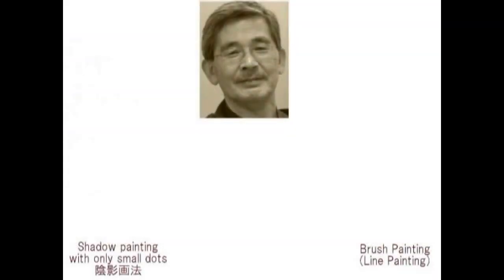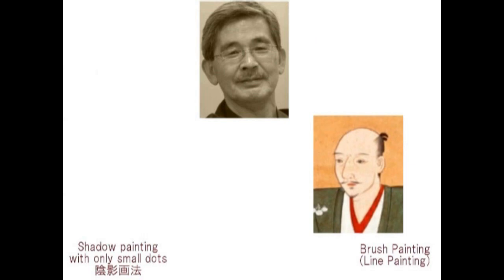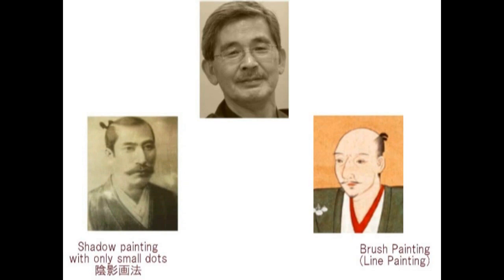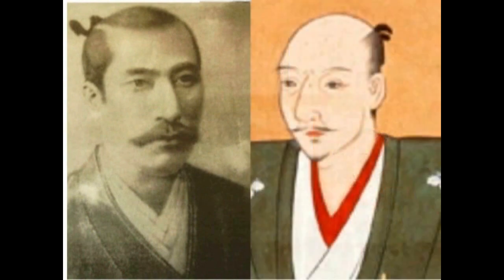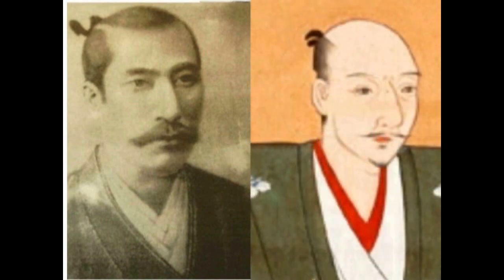線で描くのではなくて点で描くということです。そして陰影をつけていく。点をたくさん描けば濃くなり、輪郭を浮かび上がらせる方法です。大変な作業ということになります。織田信長のその絵はこうした陰影画法で描かれています。ですから陰影画法によって描かれた絵は写真に大変よく似ているということになります。